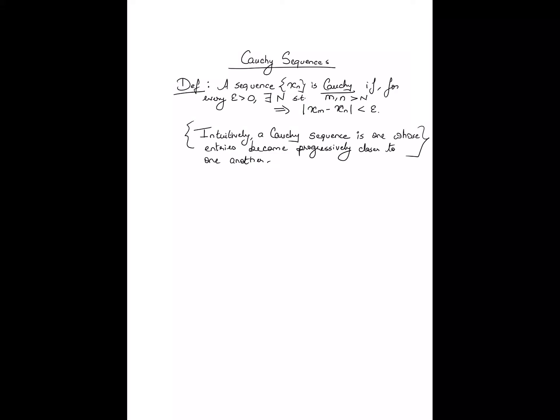The fact that the entries are getting progressively closer is captured by exactly this condition: that no matter what positive epsilon you pick, there is a certain threshold beyond which the entries become within epsilon distance of one another. You should expect the notion of a Cauchy sequence to be related to the notion of a convergent sequence, because in a convergent sequence the entries become progressively and arbitrarily closer to the limit value, while here they become closer to one another. Indeed, Cauchy sequences and convergent sequences are the same — a sequence is Cauchy if and only if it is convergent.